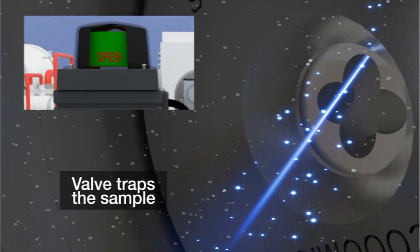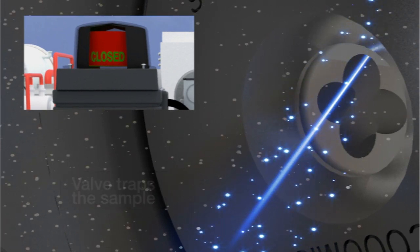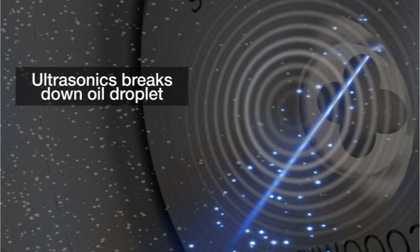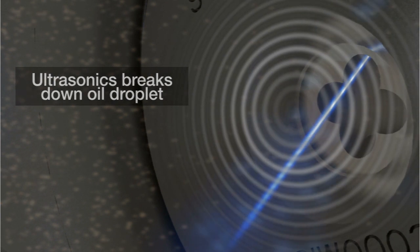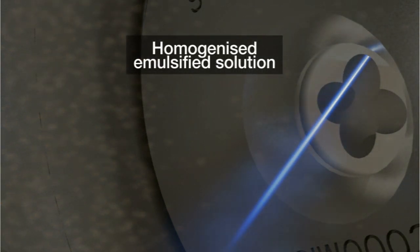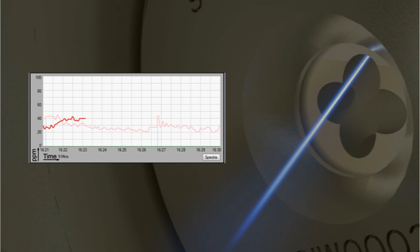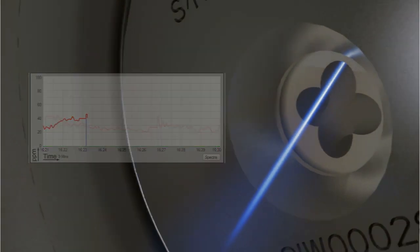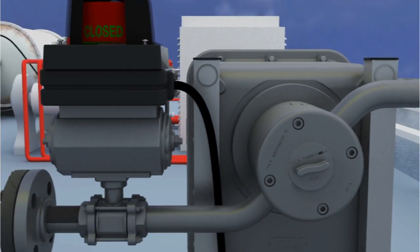Once the sensor has been cleaned, the valve traps a sample in the sample chamber, and using the ultrasonics, breaks down the oil droplets and leaves a homogenized emulsified solution. The PPM is then measured again, and this value can be used to compensate the real-time readings should oil droplet size be an issue.